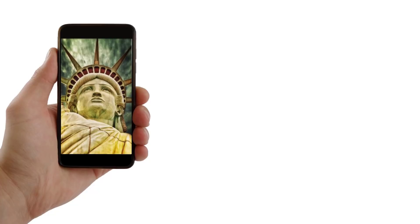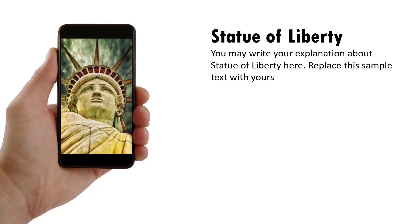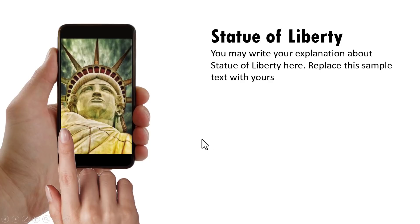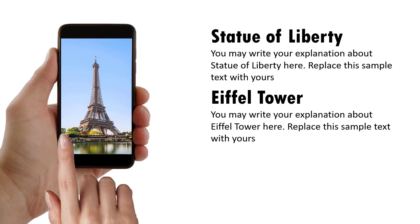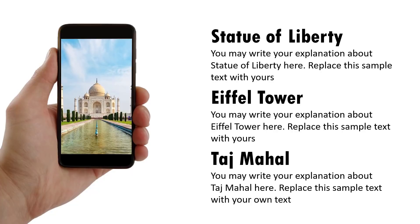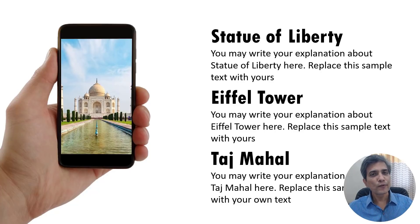The beautiful phone swipe animation you will learn to create today looks like this. On a click, the first photo shown on the phone is displayed. Then on a click, a hand comes and swipes the photo to reveal the second photo and the details of that photo are shown. Then on a click, the hand comes, swipes the photo to reveal the next one and the details of that photo are shown. You can use this beautiful PowerPoint animation effect to showcase different photos and provide details about them.